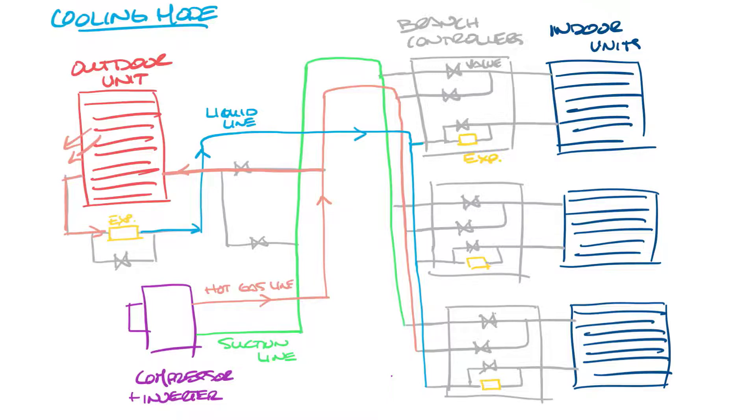And now it'll flow through the liquid line to each of the units. It doesn't need to go through the expansion device here because it is already cool and it's sent into the indoor units which sends cold air into the space and cools the space. From there the refrigerant flows out into the suction line and back into the compressor. And then it starts that process again. So any valve in our drawing that doesn't show flow going through it is closed.